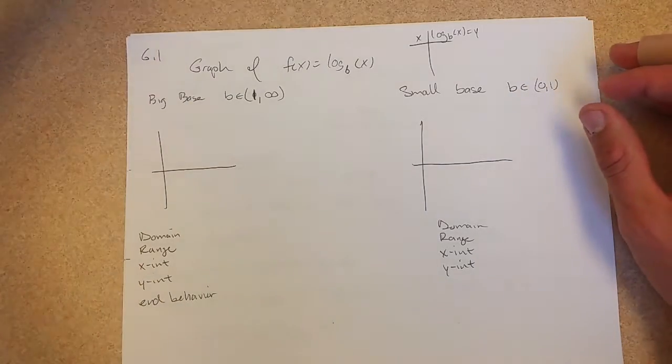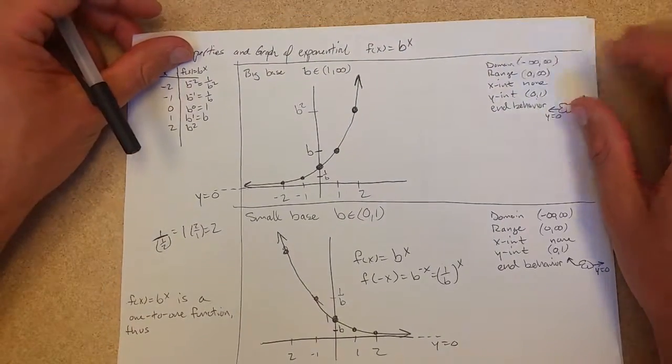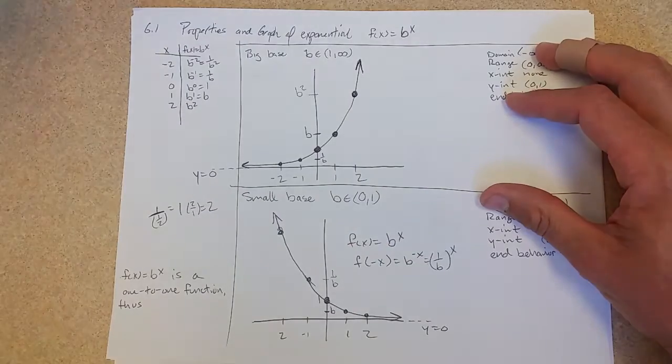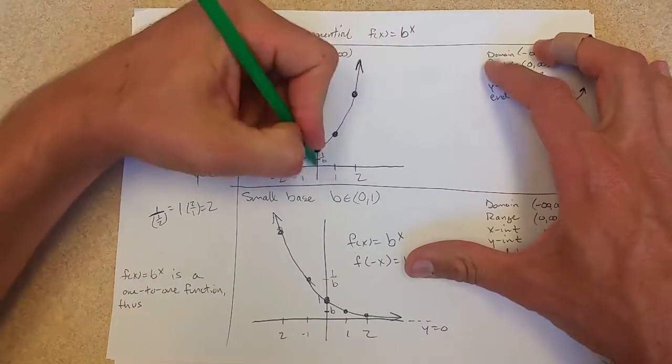So you can absolutely do that, but what I'm going to do instead is go back to our graph of exponents, and what we're going to do is reflect them across the line y equals x.